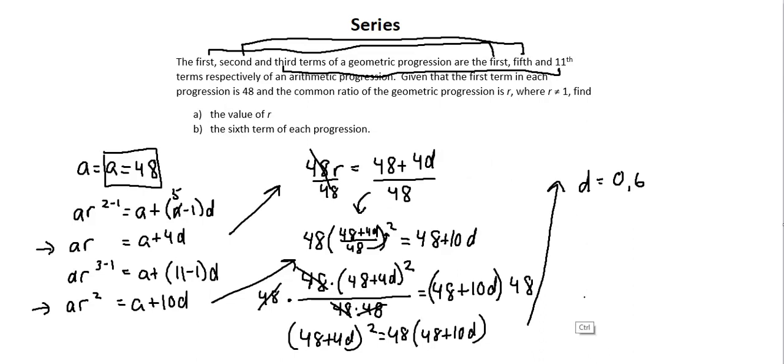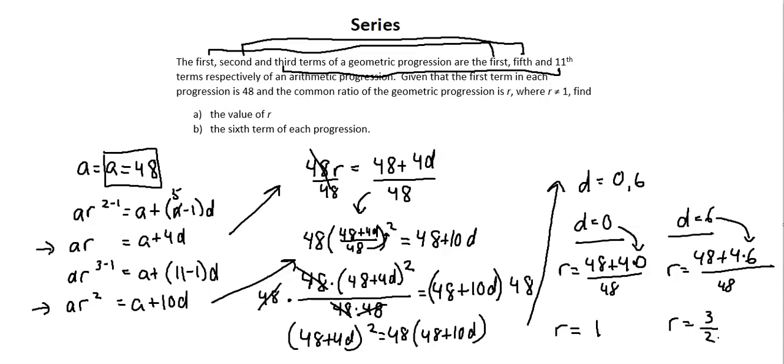Let's rewrite this as the d equals 0 case and the d equals 6 case. So r equals 48 plus 4 times something over 48. On the left, the d is 0, so I have 4 times 0. On the right, the d is 6, so I have 4 times 6. When I complete both of these calculations, I'll end up with r equals 1 and r equals 3 over 2. Notice in the requirements that the r value, r does not equal 1. Therefore, I disregard the solution producing r equals 1. And I've now answered requirement a, the value of r equals 3 over 2.